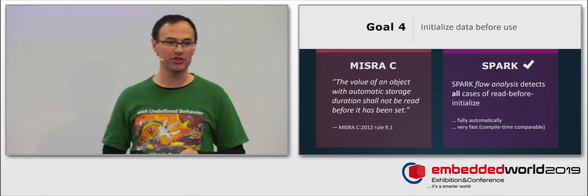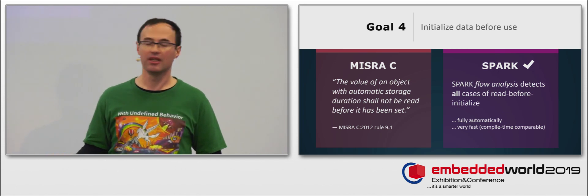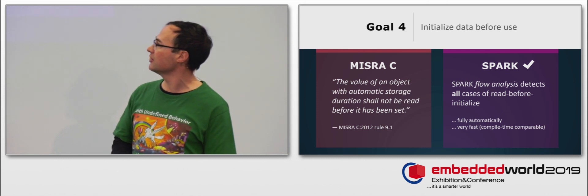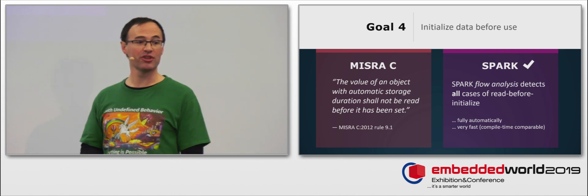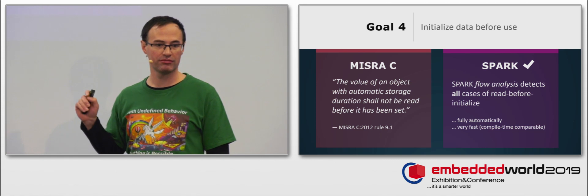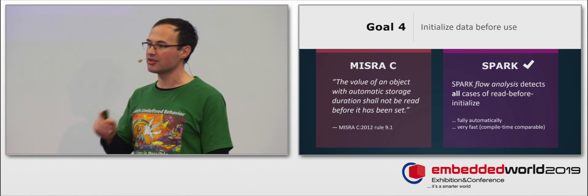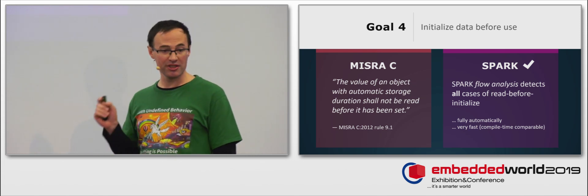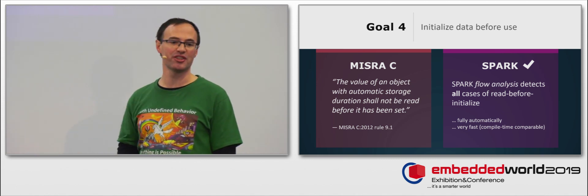MISRA C has a few rules to ensure that all the data is initialized before it's read. And the main one is rule 9.1, which says the value of an object with automatic storage duration shall not be read before it has been set. Well, it turns out it's very hard to verify, and there are very few MISRA C checkers that enforce this rule. In Spark, the Spark analysis tool can detect all occurrences of reads of uninitialized data. How is it possible? Because the Spark language subset was designed so that this is possible.